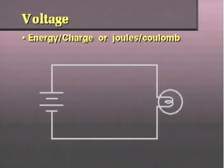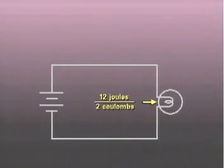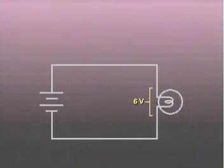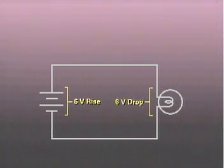For instance, if a lamp uses 12 joules of energy in one second when a current of 2 amperes flows through it, then we can calculate that the lamp is dropping 6 volts of EMF. A voltmeter reading across the lamp would measure 6 volts, and the same voltmeter would measure 6 volts across the battery. We would say that the voltage source reading was a 6 volt rise, and the load reading was a 6 volt drop.